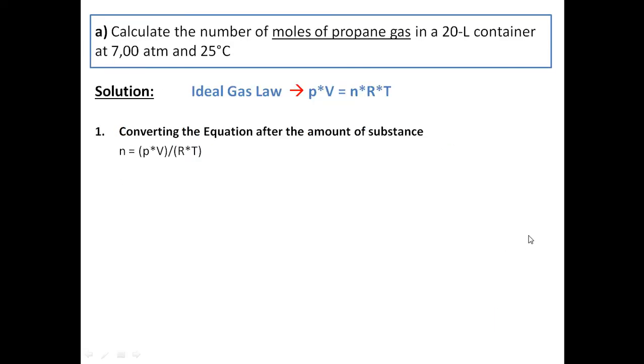Continuing to A we see that a volume is given, a pressure is given and a temperature is given. With these numbers I chose as a solution the ideal gas law and converted it in step 1 after the amount of substance. As you can see we get this equation.